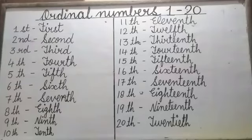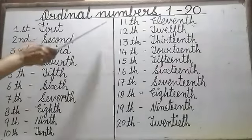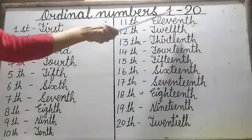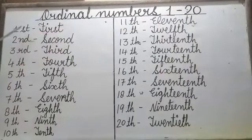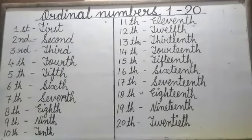Kids, let's learn Ordinal Numbers 1 to 20. First, Second, Third, Fourth, Fifth, Sixth, Seventh, Eighth, Ninth, Tenth.